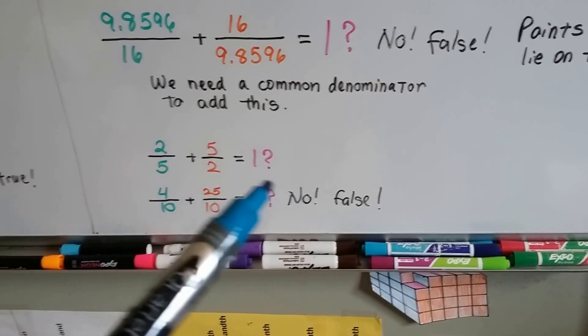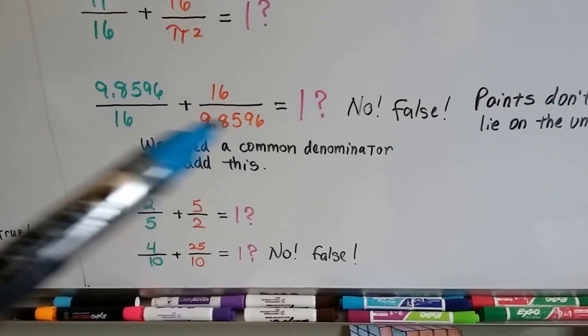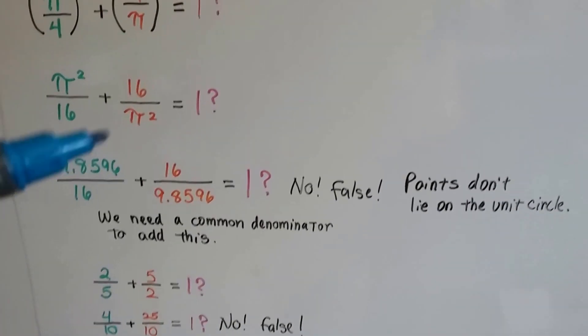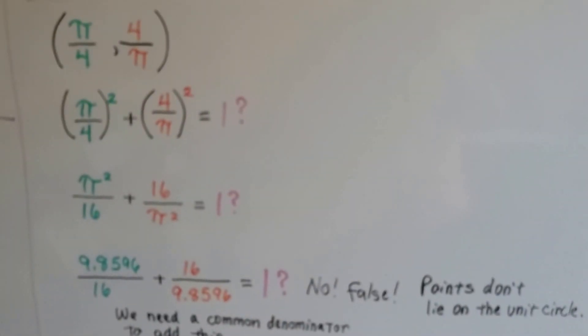So, is 4 tenths plus 25 tenths equal to 1? No, that's 29 tenths. So, that's false. Because it needs a common denominator, it's not going to equal 1. So, these points do not lie on the unit circle. They do not lie on the unit circle.